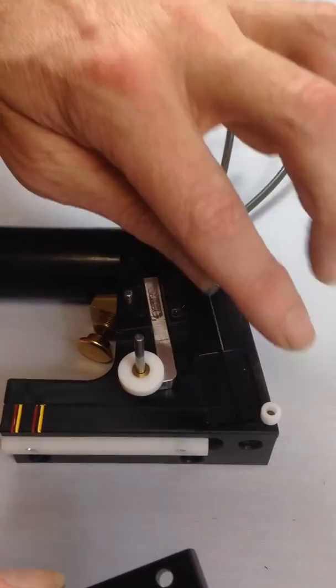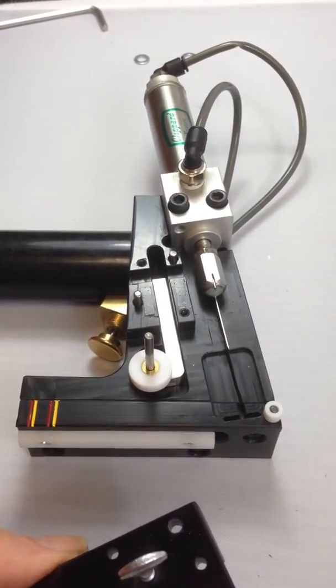As you remove the faceplate, be careful not to lose the two locating pins and the spacer wheel from the corner of the shuttle.